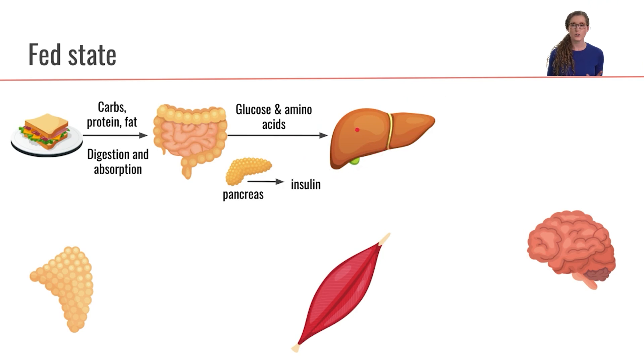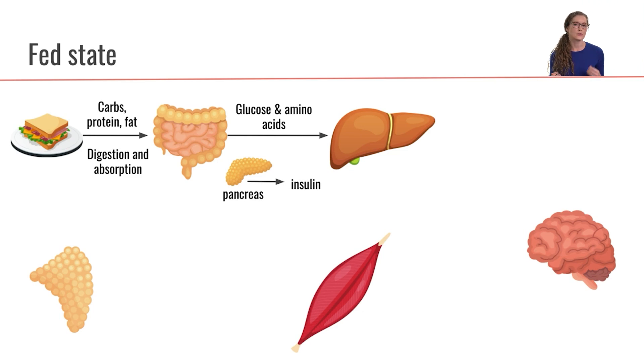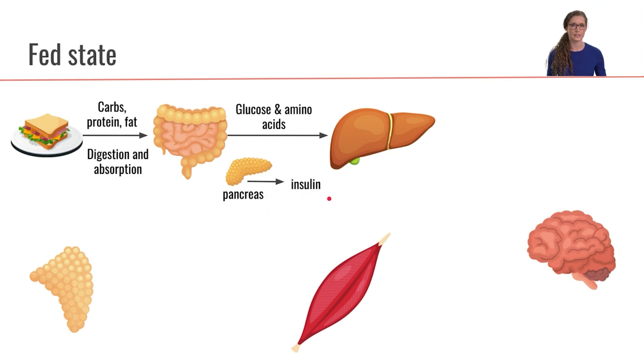The pancreas is going to notice that the concentration of glucose in the blood has increased. So that increase in blood glucose concentration is going to stimulate the pancreas to secrete insulin.